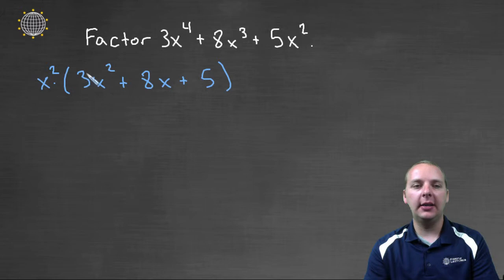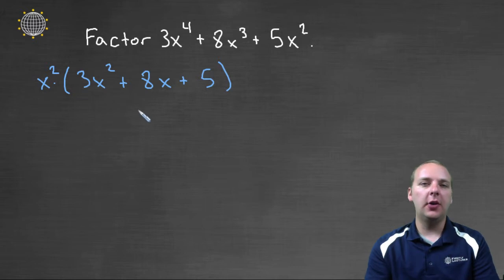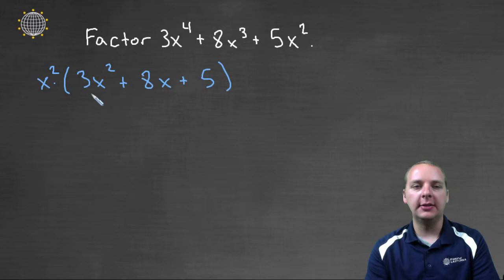Because this has a leading coefficient other than one, you can either factor this polynomial using the trial and error method, or you can use the grouping method. And for this video I think we're going to try the grouping method just to try that as an example.